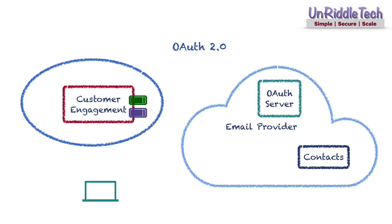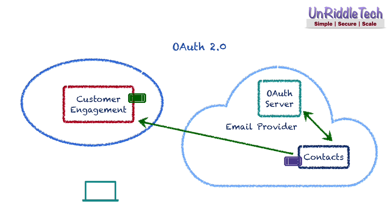Upon successful verification, the OAuth server provides two tokens to the application: an access token and a refresh token. The access token may have a lower validity period than the refresh token. If the application needs access after the access token expires, it can provide the refresh token to the OAuth server and get a new access token without repeating the user authentication steps. The application presents the access token to the resource server — the server that manages access to email contacts. The resource server verifies token validity with the OAuth server, and upon successful verification, read access to email contacts is provided to the application.